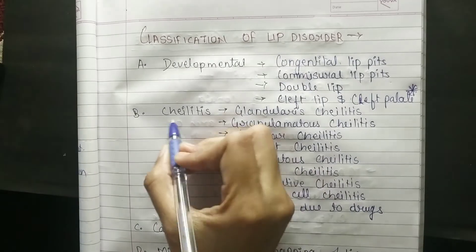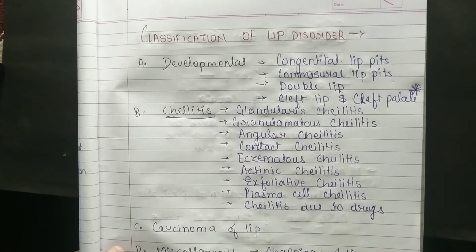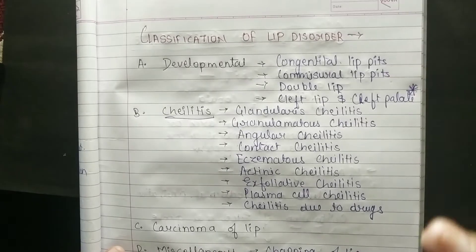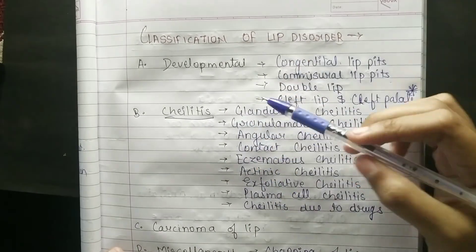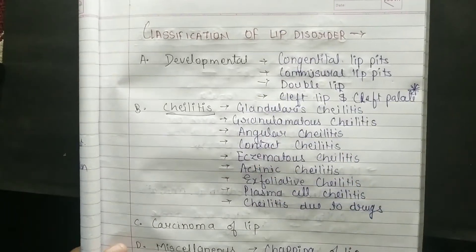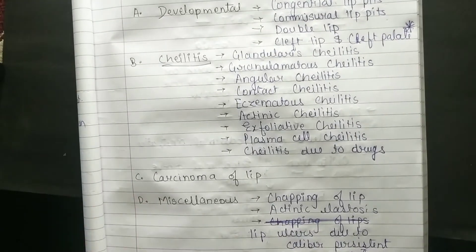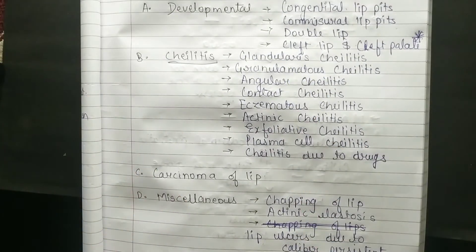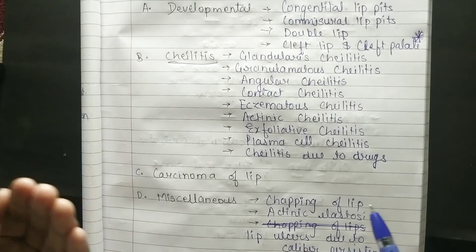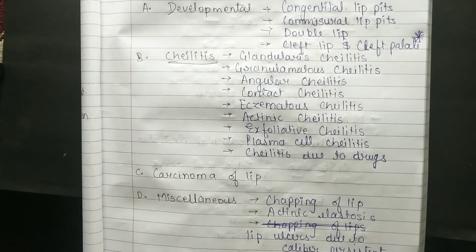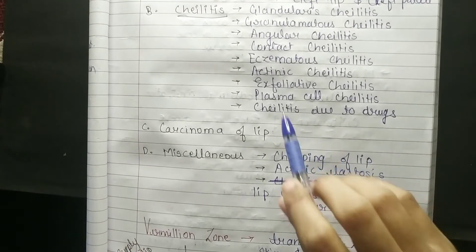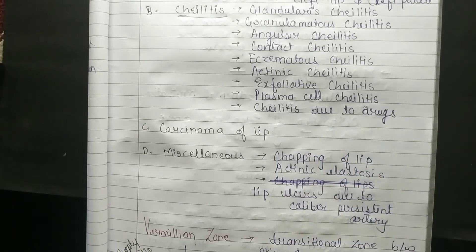Next is chelitis. What is chelitis? Chelitis means inflammation of the lip. There are several types we will study in this series: glandular chelitis, granulomatous chelitis, angular chelitis, contact chelitis, eczematous chelitis, actinic chelitis, exfoliative chelitis, plasma cell chelitis, and chelitis due to drugs.